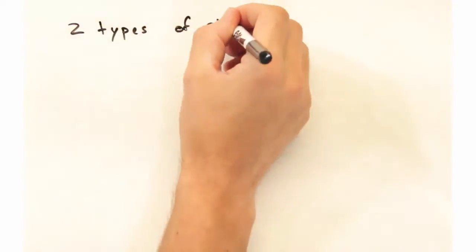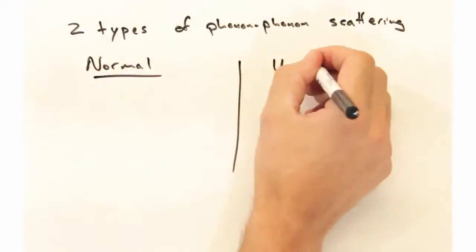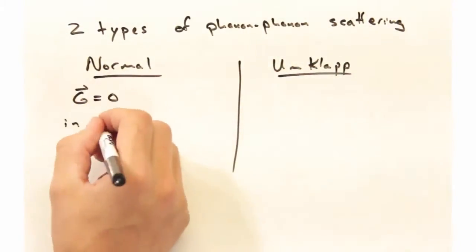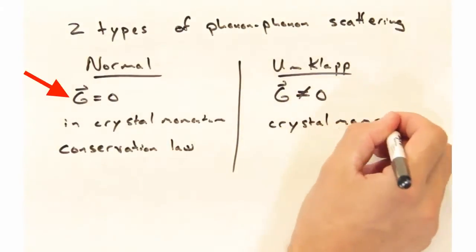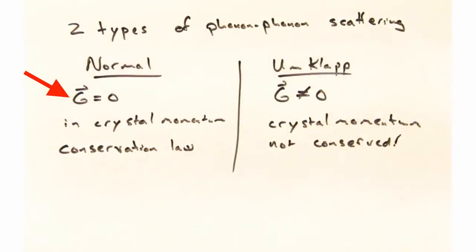Within phonon-phonon scattering, we have two types of scattering. First, we have normal scattering, and we have this other type called umklapp scattering. With normal scattering, g equals zero in the crystal momentum conservation law, which is to say that Q1 plus Q2 simply equals Q3. On the other hand, in umklapp scattering, g does not equal zero in the crystal momentum conservation law. So let's take a look at an example to see how that plays out.